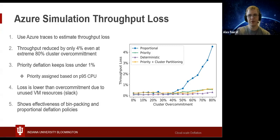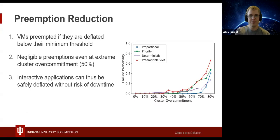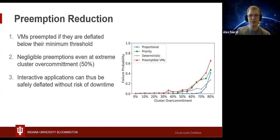These results show the effectiveness of the deflation bin-packing and proportional deflation policies. VMs are preempted when the server cannot reclaim resources even from deflatable VMs due to too severe cluster over-commitment. The proportional policy, while causing the most loss, gave the best reduction in preemption chance. All deflation policies were able to nearly eliminate preemption risk at high cluster over-commitment levels of 40% to 50%, showing that cloud providers can be confident in their ability to reclaim resources with greater than a 99% chance at such levels. Interactive applications can be safely deflated without the risk of preemption or downtime.